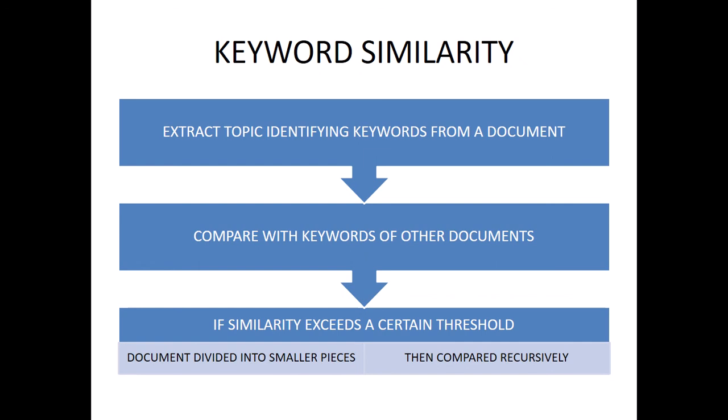Keyword similarity works by identifying keywords from a document and comparing them with keywords of other documents. If the similarity exceeds a certain threshold, the document is divided into small pieces and compared recursively. This targets repeated keywords and compares them with other sources where those keywords are used, thereby identifying plagiarism.